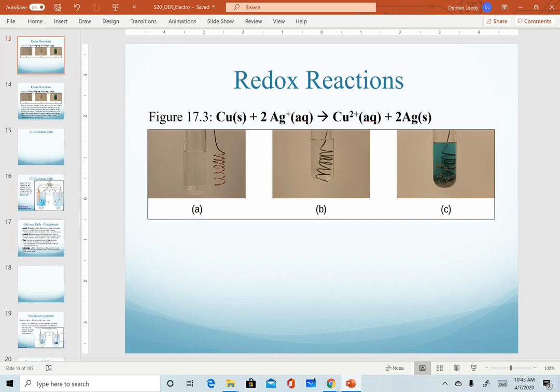Continuing with our example from the previous video where we combined copper with silver ions, we know from previous chemistry courses that if we take a copper coil and put it in a solution of silver nitrate, we combine them together, we know that over time this reaction happens. So this is an overall spontaneous reaction.